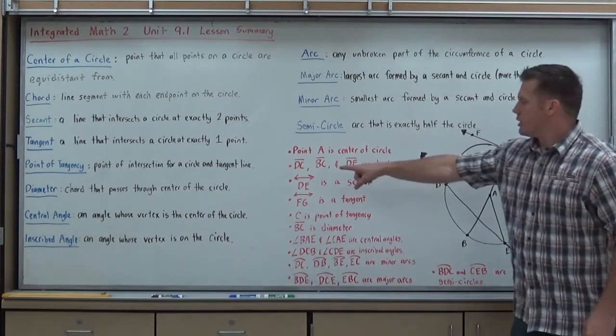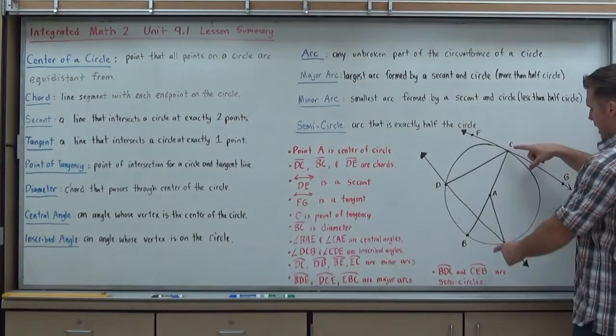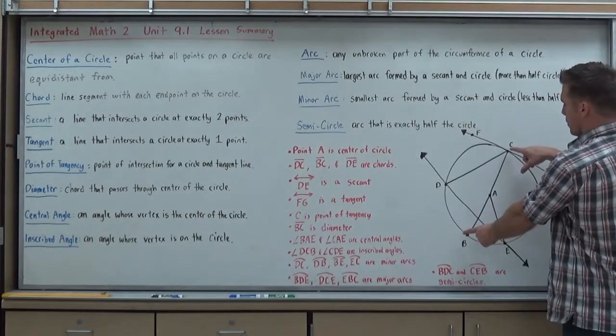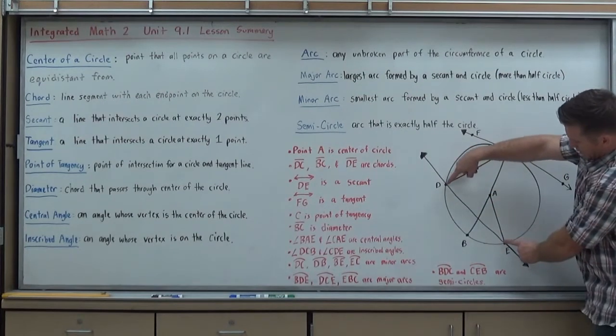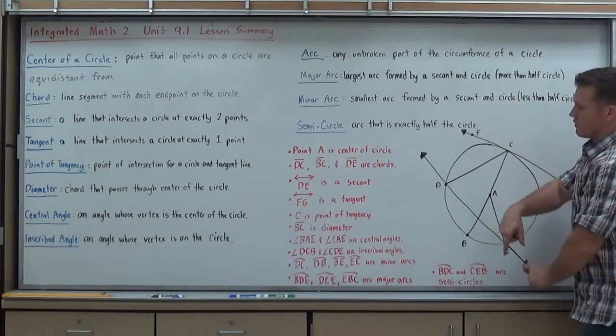I have it written here as well. DC is a chord, BC is a chord, and DE is a chord. You can see that it's a segment connecting two points on the outside of the circle.